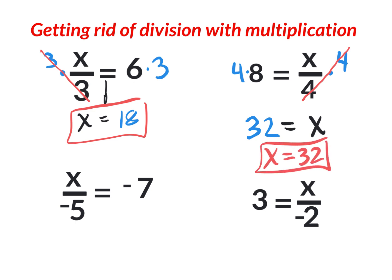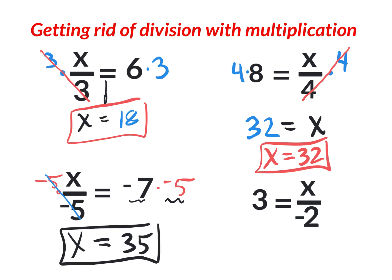This one says x divided by negative five equals negative seven. You don't want divided by negative five, so you multiply by negative five — that exact value, not just five. If you multiply by five only, you'd still have a negative. To get rid of everything and leave x all by itself, multiply by negative five on both sides. Negative five and negative five cancel out, leaving x. Negative seven times negative five is a positive thirty-five. The answer is x equals thirty-five.